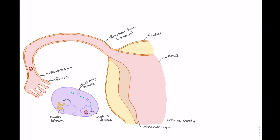The corpus luteum releases hormones such as progesterone and estrogen, which are important in increasing the size of the endometrium to prepare the uterine cavity for implantation. We also see the release of relaxin and inhibin, which prevent uterine contractions.